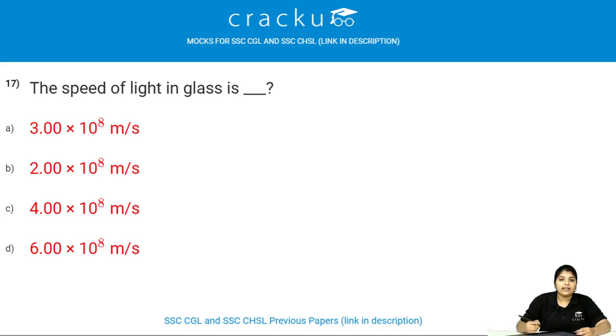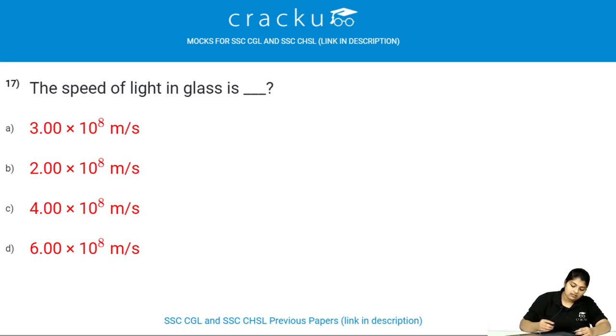The speed of light in glass is 2 × 10⁸ meters per second.